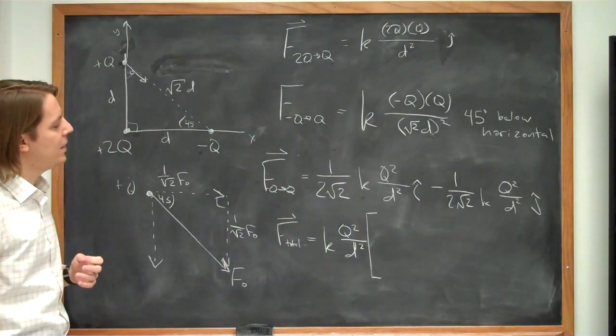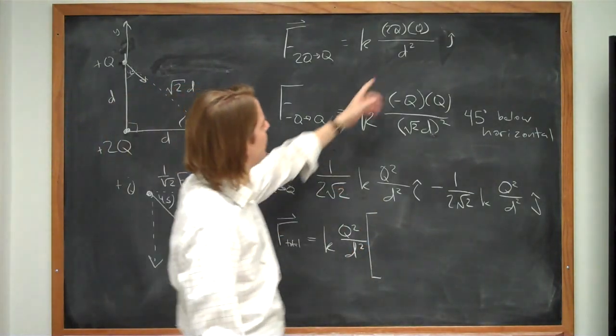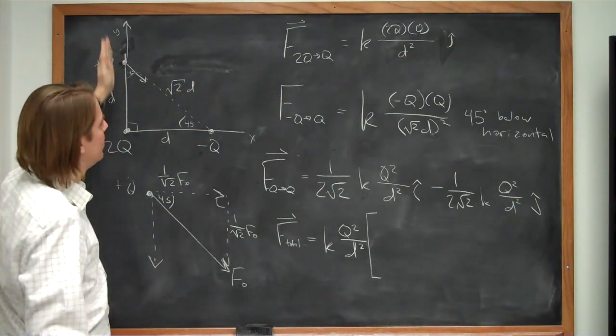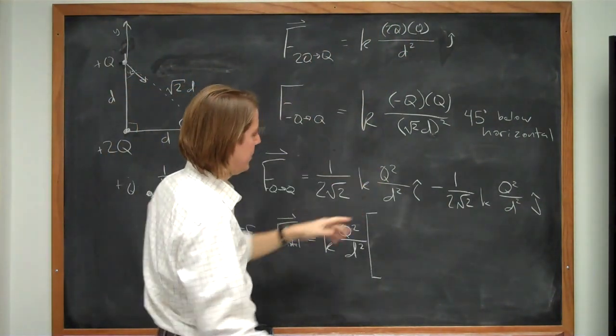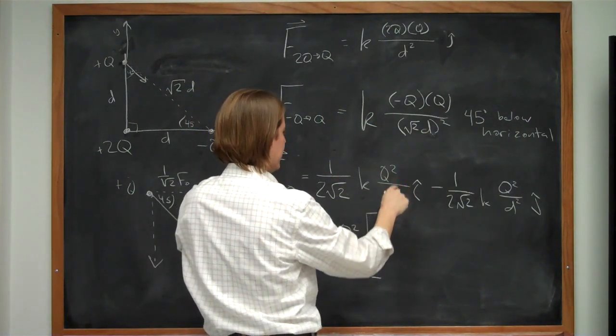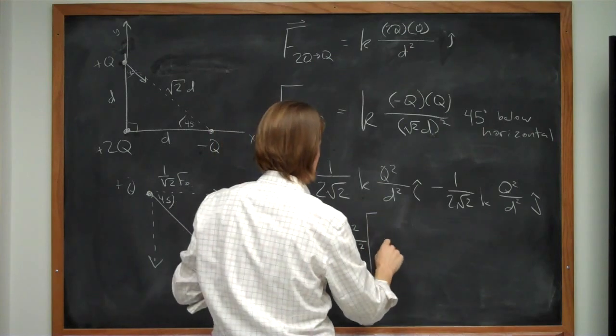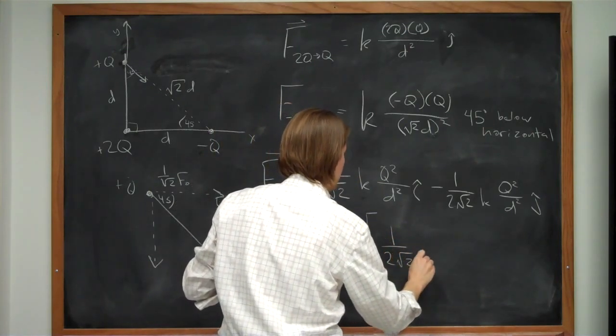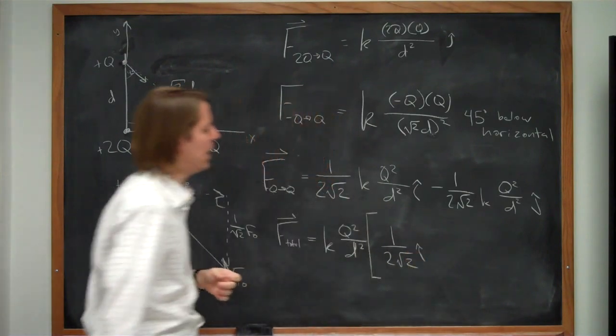Alright. So they all have that. And let's see what's left. kq squared over d squared. For the i component. This has no horizontal component. This is just vertical. This one has its horizontal component here. So if we take out the kq squared over d squared. We're left with 1 over 2 square root of 2. In the i direction.